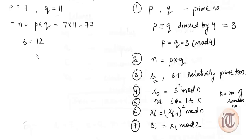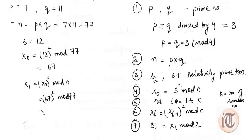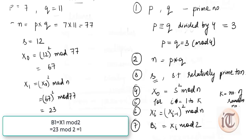We calculate X₀ as S squared mod N: 12 squared mod 77, which equals 67. Then for i equals 1, X₁ equals X₀ squared mod N, which is 67 squared mod 77, and it comes out to be 23. The first bit B₁ equals X₁ mod 2, which is 23 mod 2, and the first pseudo random bit is 1.